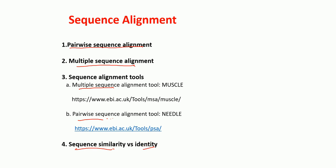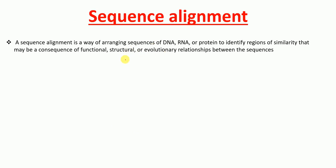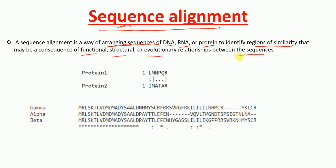The first point I want to discuss is sequence alignment. As the name suggests, sequence alignment is a way of arranging sequences — it can be a DNA sequence, RNA sequence, or a protein sequence — to identify the reasons of similarity that may be a consequence of functional, structural, or evolutionary relationships between the sequences. Sequence alignment is the alignment of either nucleotide bases like A, T, G, C or the amino acids from a protein.